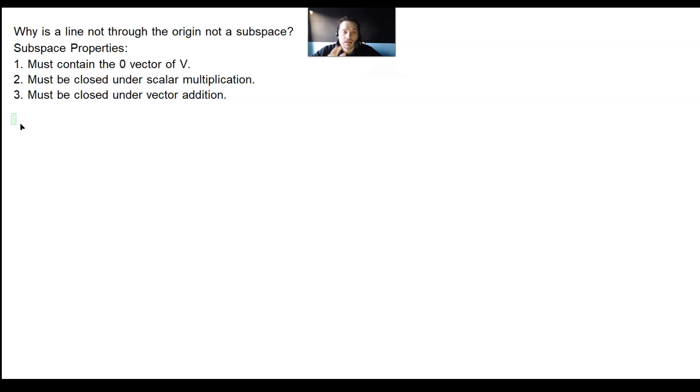So to understand that, look at the basic properties of a subspace in linear algebra. It must contain the zero vector of V, must be closed under scalar multiplication, and it must be closed under vector addition.